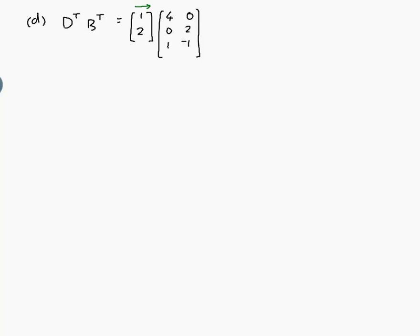This number of spaces along here is supposed to be the number of spaces along here, and they are not the same, so therefore the product is undefined. One more time, D transpose is a 2 by 1 matrix, and B transpose is a 3 by 2 matrix, and those two numbers in the middle don't match. So this product is undefined.